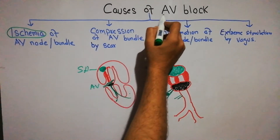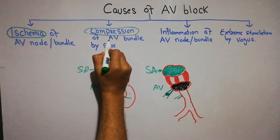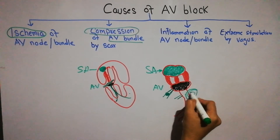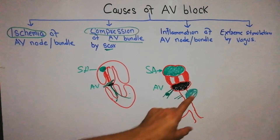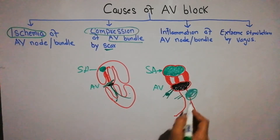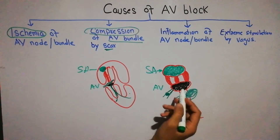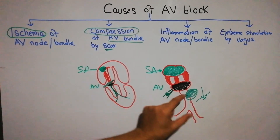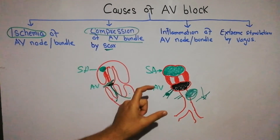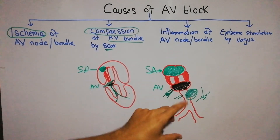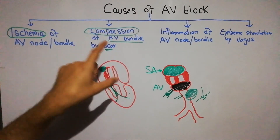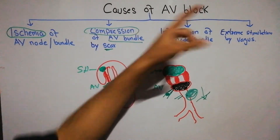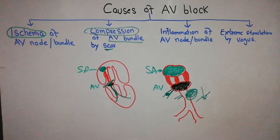Another cause for AV block is compression of the AV bundle. The bundle can be compressed by scar tissue or a calcified portion of the heart muscle. When it is compressed, its ability to transfer cardiac impulses or electrical current decreases. So compression of the AV bundle by any scar or calcified portion of the heart muscle is another cause for AV block, which then contributes to cardiac arrhythmias.